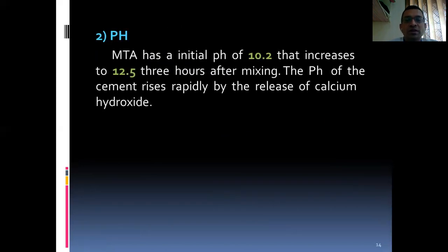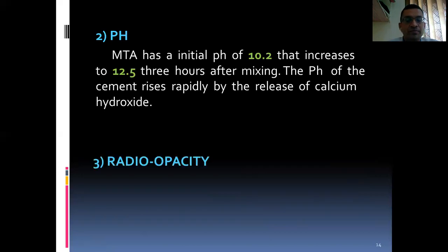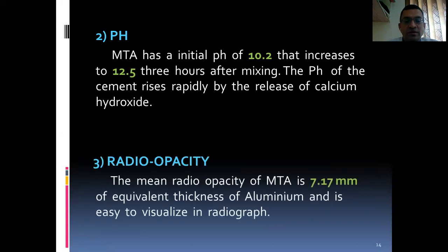pH: initially it is 10.2, which increases to 12.5 three hours after mixing, so it has an alkaline pH. The pH of the cement rises rapidly by the release of calcium hydroxide. Radiopacity: the mean radiopacity of MTA is 7.17 mm of equivalent thickness of aluminum and is easy to visualize in a radiograph.